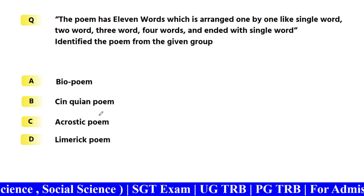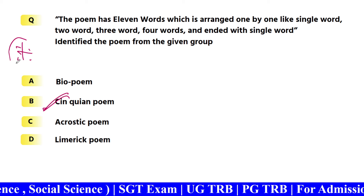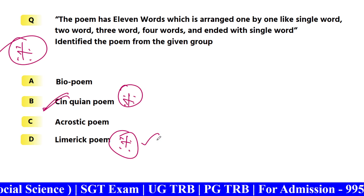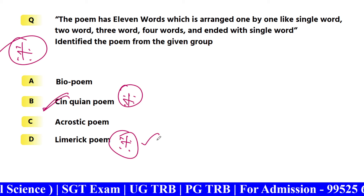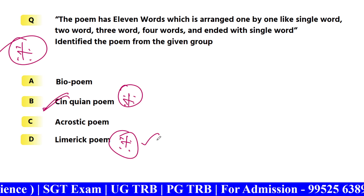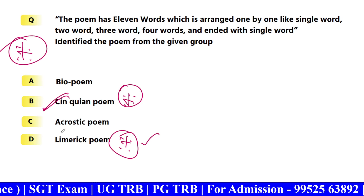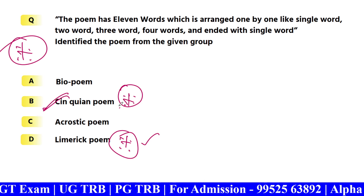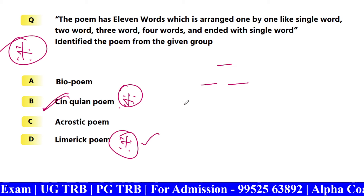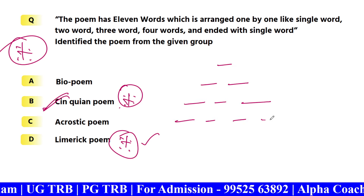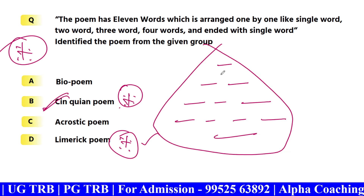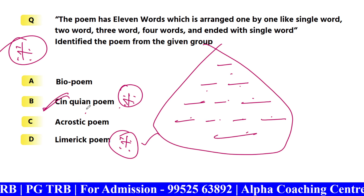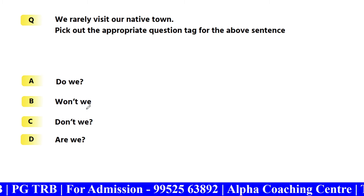The poem has 11 words — this is a repeated question. This is a cinquain poem. A limerick has five lines with a silly, funny theme. A cinquain poem is arranged with words in a 1-2-3-4-1 structure: single word, two words, three words, four words, and ending with a single word. It is 1+2+3+4+1 = 11 words total.